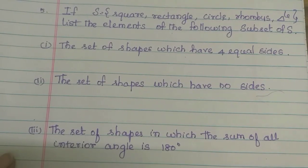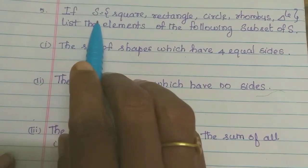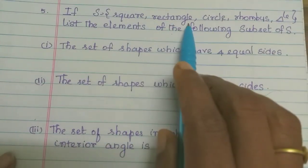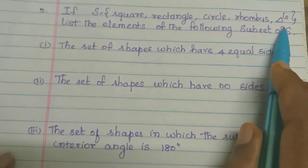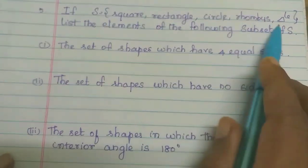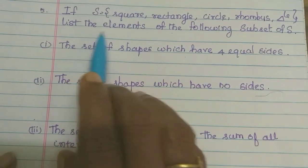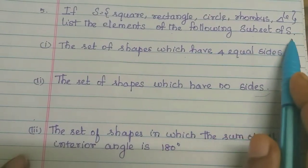Now exercise 1.2, 5th sum: S is equal to the set containing square, rectangle, circle, rhombus, and triangle. We have to list the elements of the following subsets of S.